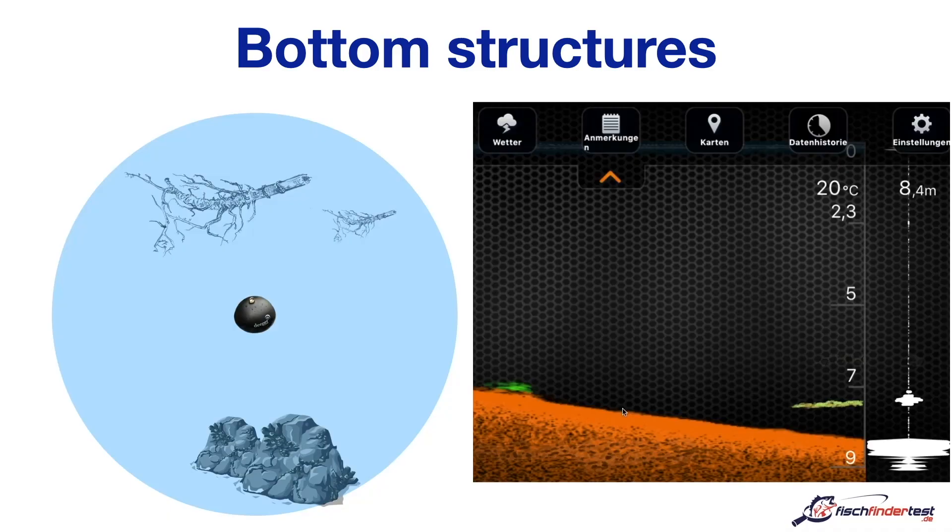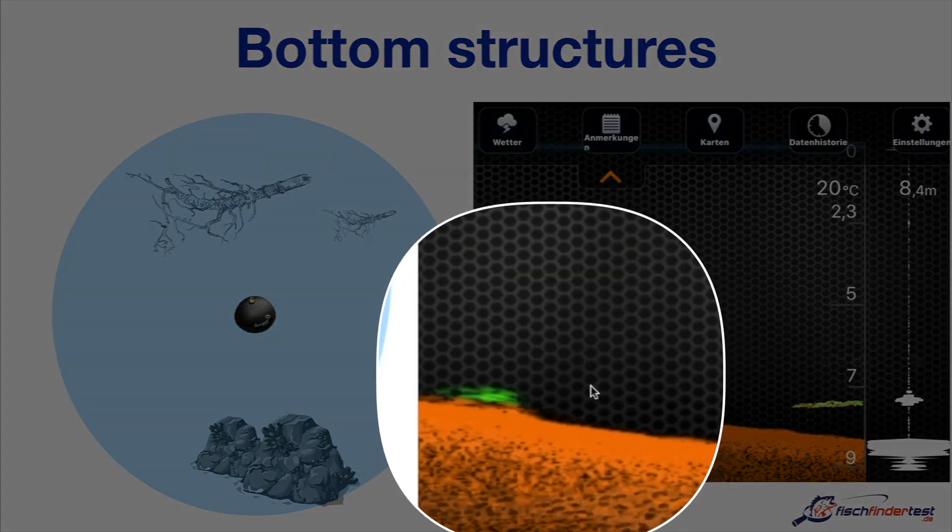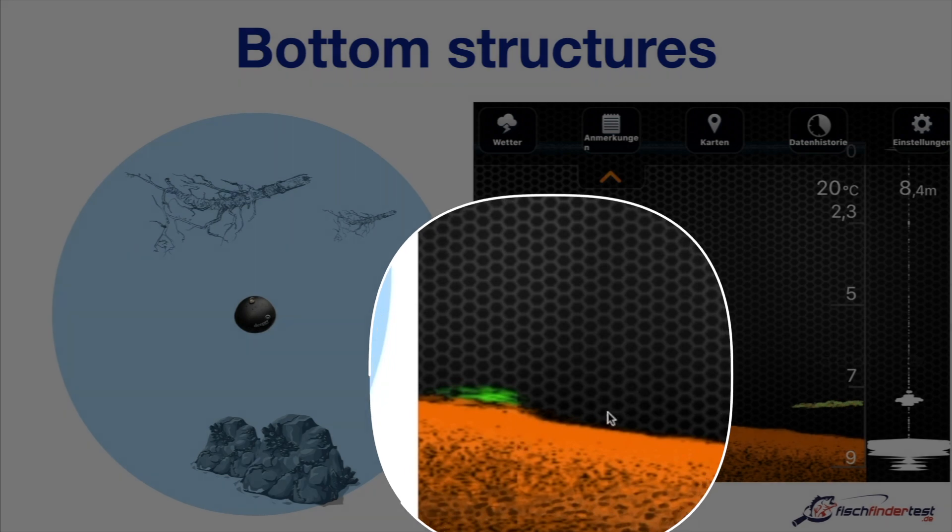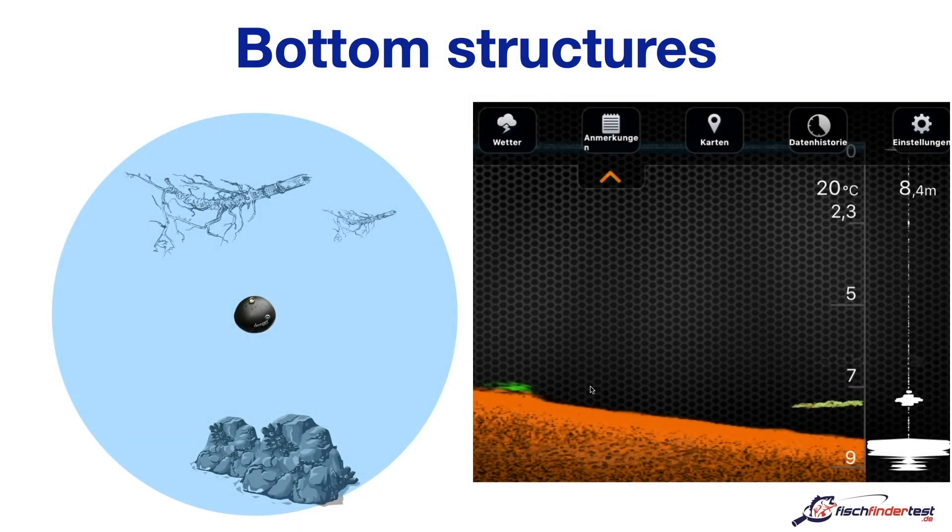If there are only a few larger stones in the living room for example, the software decides whether and how the echo of these stones is displayed. This means that although we can see these structures and plants below here, if other structures on the bottom are too small, the software ignores them and they are not displayed. This is especially the case if they are not interpreted as plants.